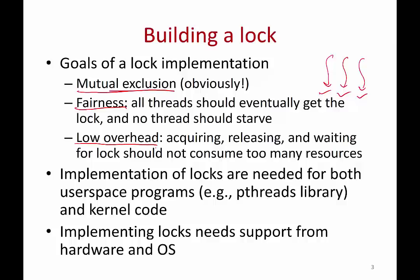There are several places where you need to implement locks. For user programs, something like the pthreads library gives you the API for lock and unlock and needs to implement the logic. At the same time, you also need to implement locks inside the operating system for its own data structures. Implementing locks is not just a software operation — you also need a small amount of support from the hardware. With hardware support, the operating system implements locks both for user programs and for itself.